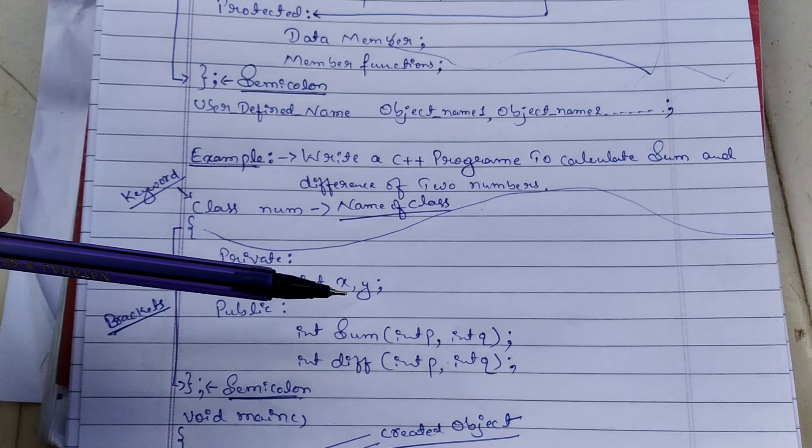Next, s2 calls the difference method with 600 and 500. Taking int p as 600 and int q as 500, we get 600 minus 500 equals 100. So s1 value is 500 and s2 value is 100.